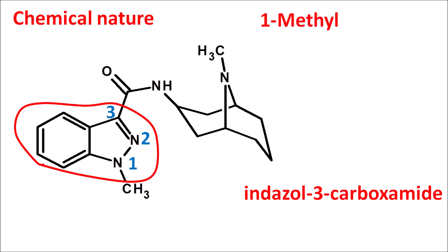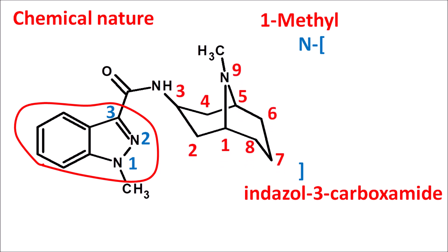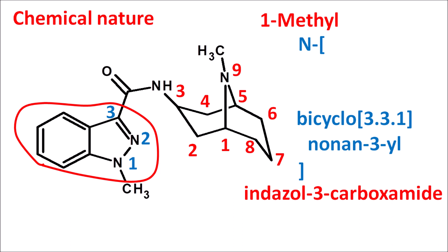On the nitrogen of the amide, a bicyclic ring system is present. Numbering from the bridgeheads, it is a 9-membered bicyclic ring system with three carbons on one side, three on the other, and one atom in the bridge — this is bicyclo[3.3.1]nonane, attached at the third position (3-yl). Nitrogen is at the ninth position (9-aza) with a methyl group also at the ninth position (9-methyl). This gives the complete IUPAC name of Granisetron.